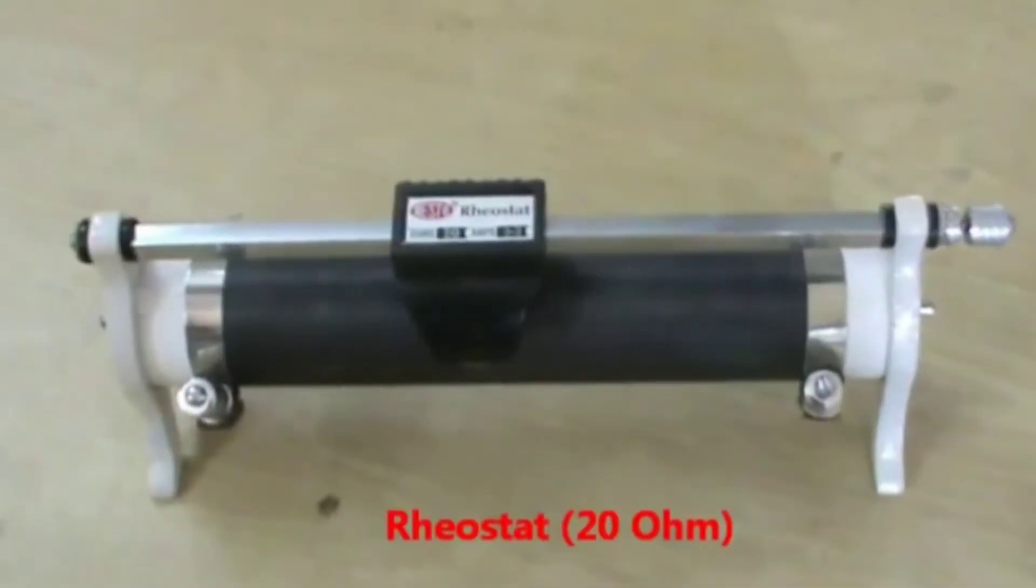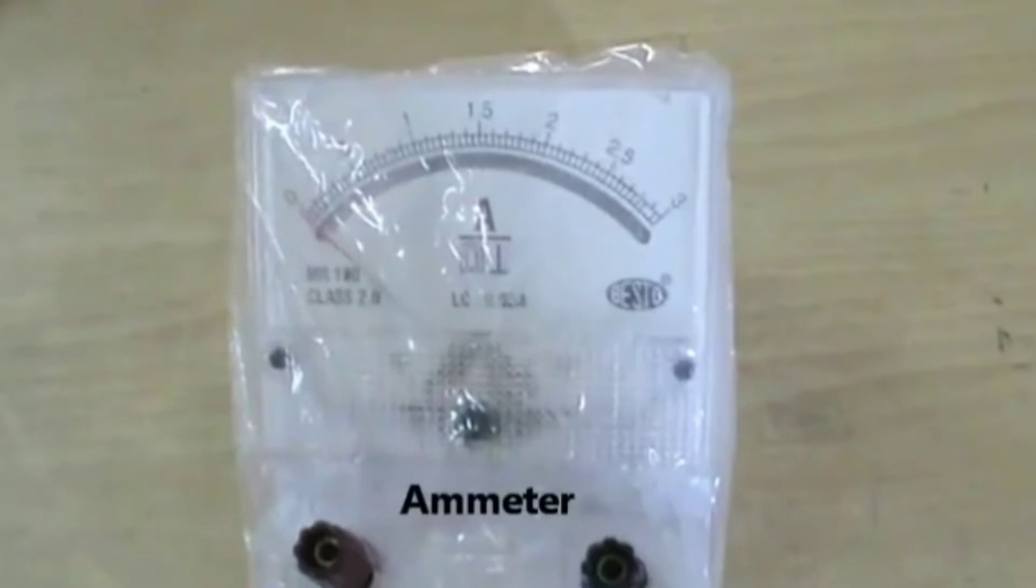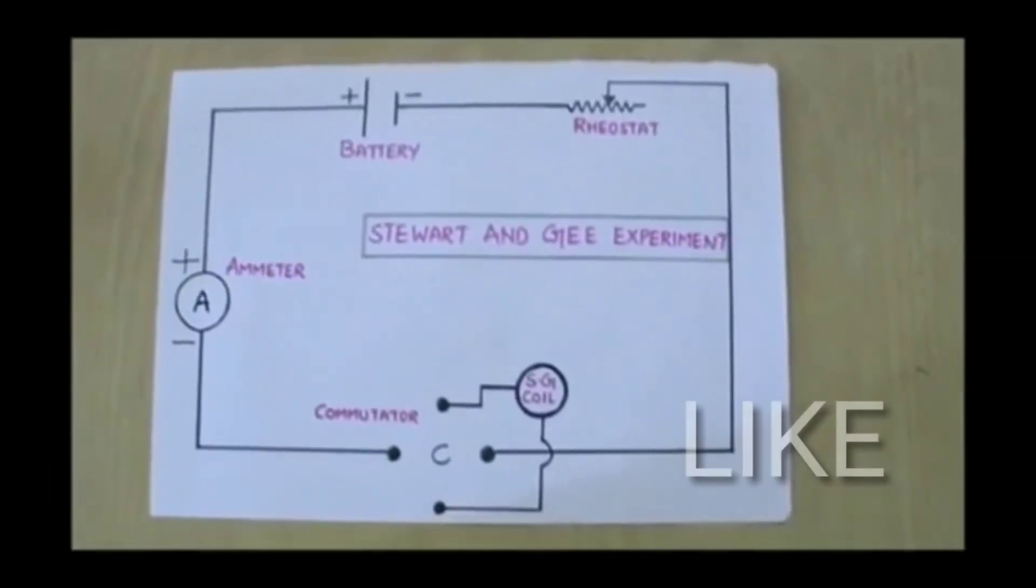Rheostat up to 20 ohms, variable commutator, ammeter to measure the current, battery eliminator as DC source, and the circuit diagram.